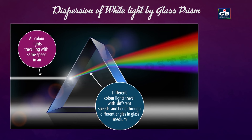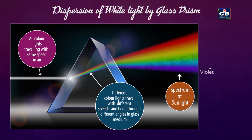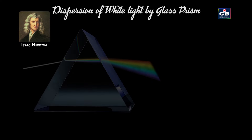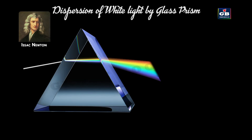When white light or sunlight is dispersed, we get a band of seven colors called the spectrum of sunlight — violet, indigo, blue, green, yellow, orange, and red, simply remembered as VIBGYOR. Isaac Newton was the first to split sunlight using a glass prism.